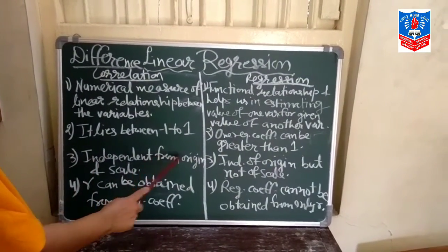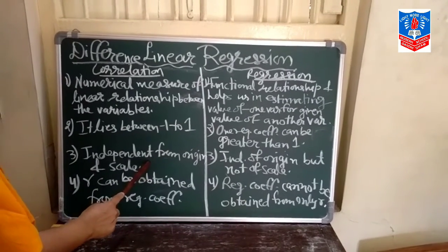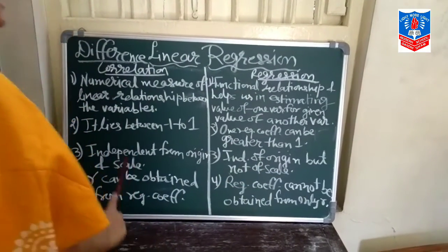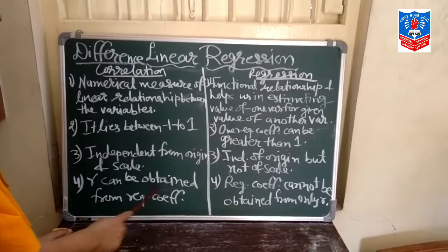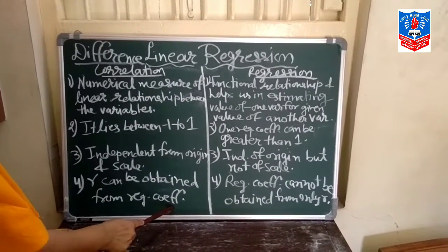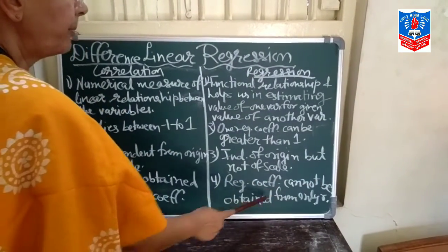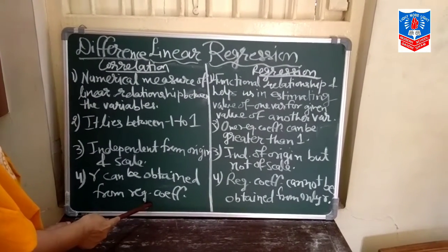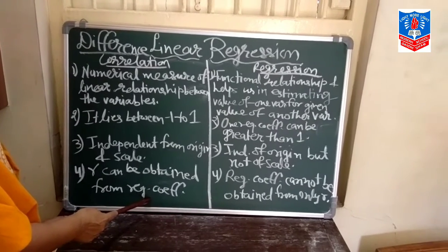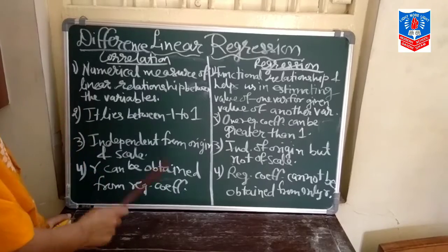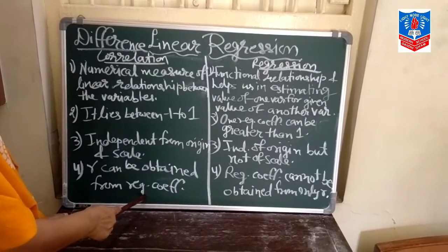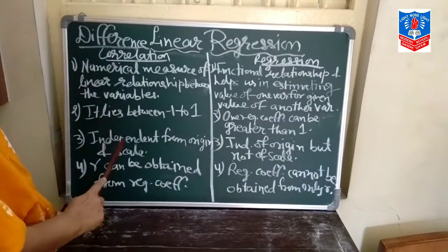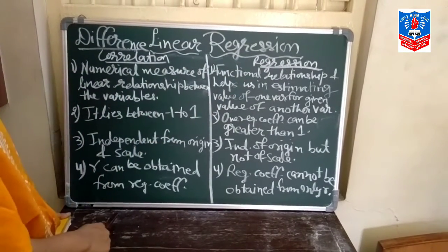The third difference: correlation is independent of both origin and scale, while regression is independent of origin but not of scale — which we already discussed earlier. The fourth difference: R can be obtained from regression coefficients, while regression coefficients cannot be obtained from R alone. As we saw in the formula from the last session, B = R into σ_Y upon σ_X, so with R we can obtain regression coefficients but not vice versa. These are the four points of difference between correlation and regression.